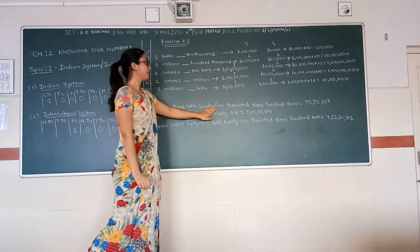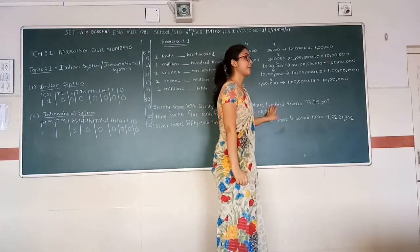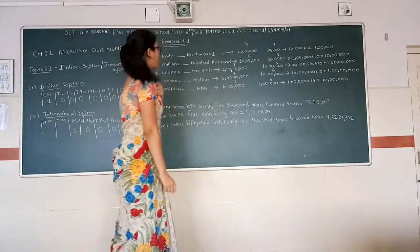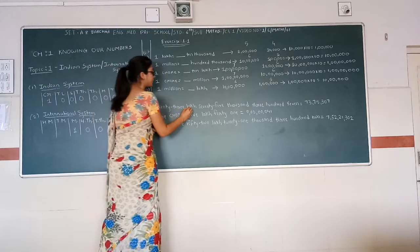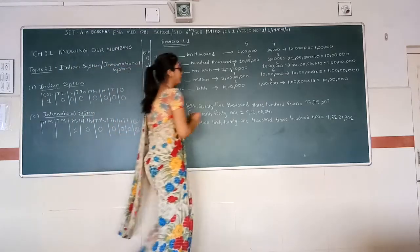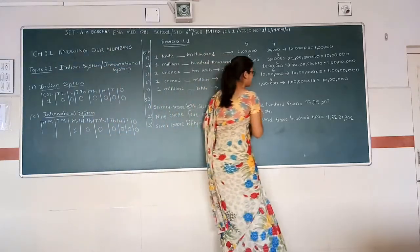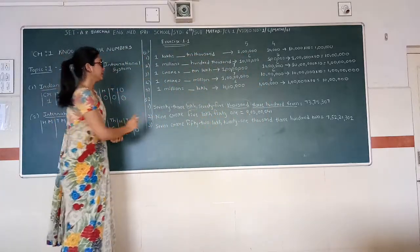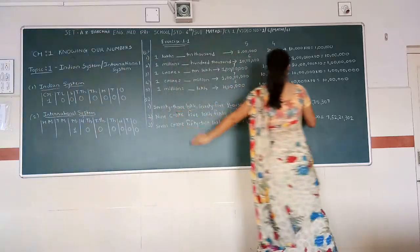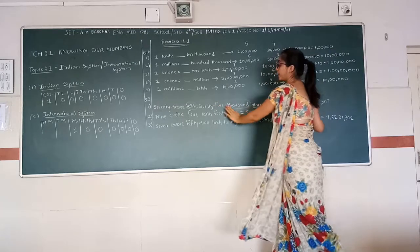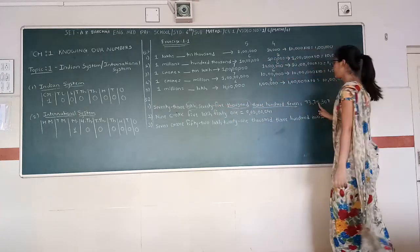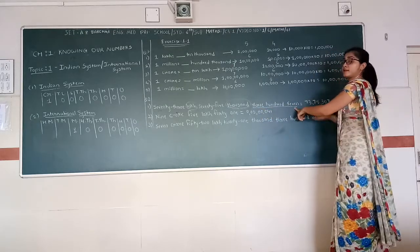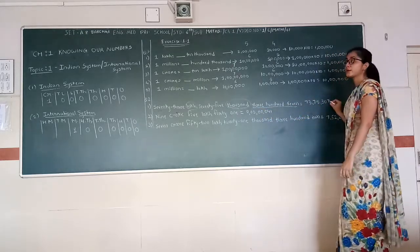Now let's move to question number two. We have seventy-three lakh, seventy-five thousand, three hundred and seven. In this question we have to place commas. We have a crore period, a thousand period, and ones. So we will distribute into families: put a comma after seventy-three, then after seventy-five, and three hundred seven has no comma after it.